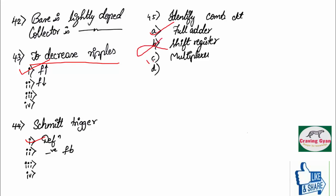We know, full adder, multiplexer, demultiplexer, encoder, decoder, priority encoder, even half subtractor and full subtractor also belongs to combinational circuits.